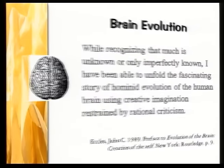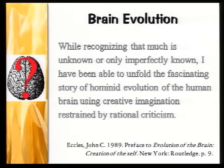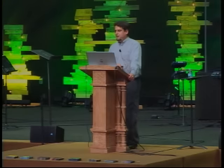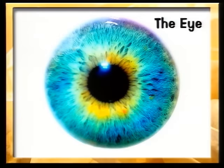The evolution of the brain remains a mystery today. In the preface to The Evolution of the Brain in 1989, John Eccles states that he 'unfolded the fascinating story of hominid brain evolution using creative imagination restrained by rational criticism.' An important accessory to the brain is the eye, which is actually considered in some books to be part of the human brain — it is so well integrated that it actually performs a lot of the kinds of processing we attribute to the brain.